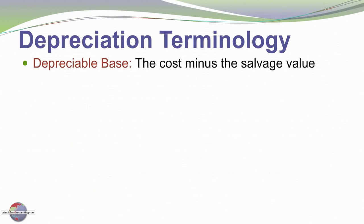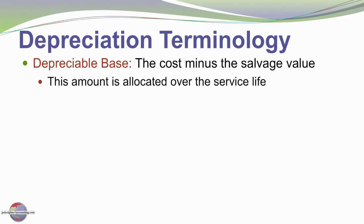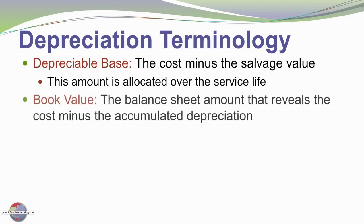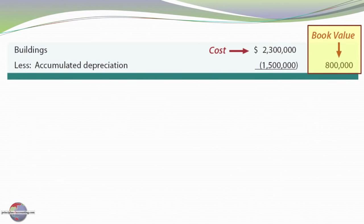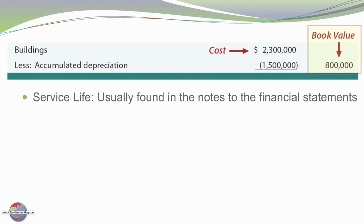Depreciable base is the cost minus the salvage value — that's the cost we're going to allocate over the service life, the amount to be depreciated. Book value, or net book value, is the balance sheet amount that reveals cost minus accumulated depreciation. For example, we can see the cost of an asset such as buildings, less accumulated depreciation, to get the book value or net book value.